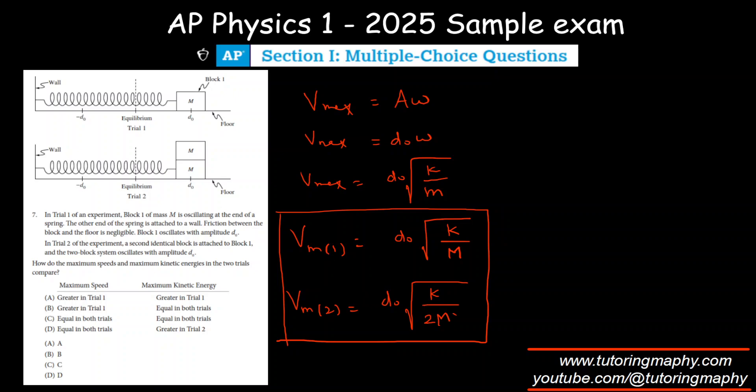The ratio will decrease, so V max is greater in Trial 1. So it has to be either option A or B. Alright, now let's look at kinetic energy.